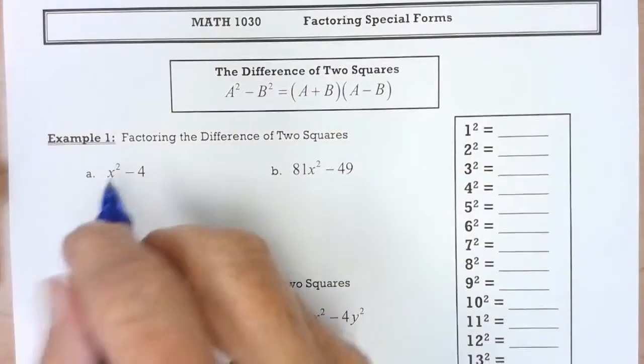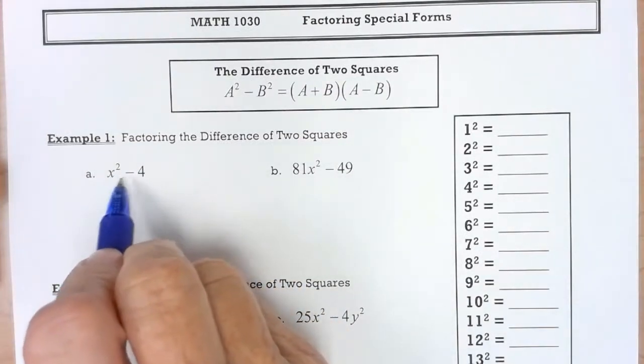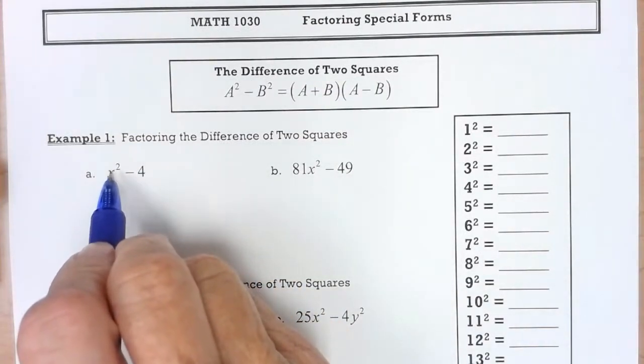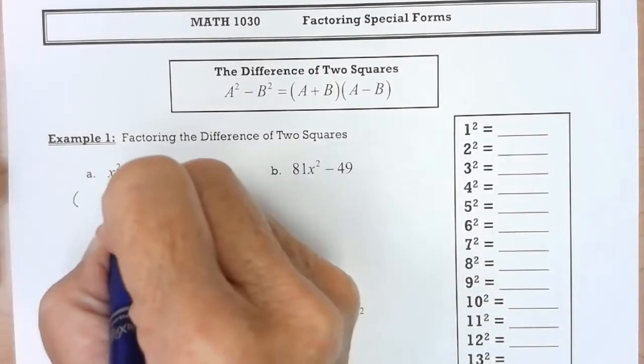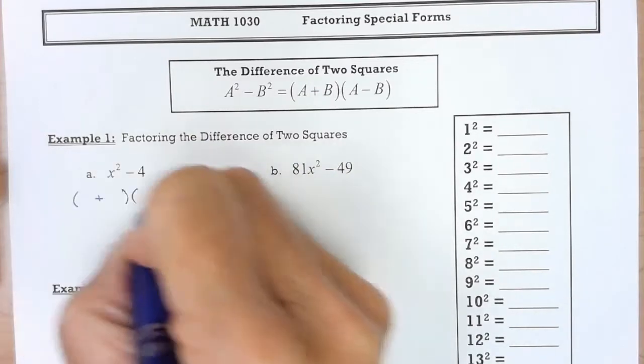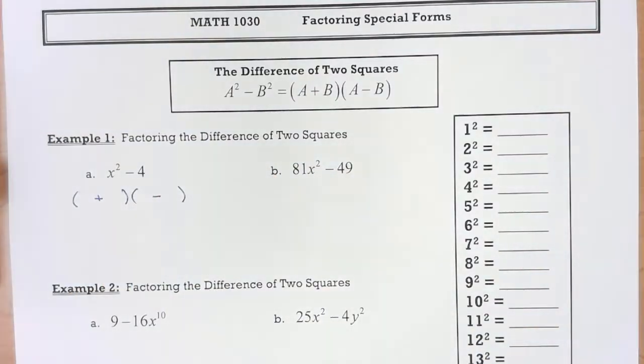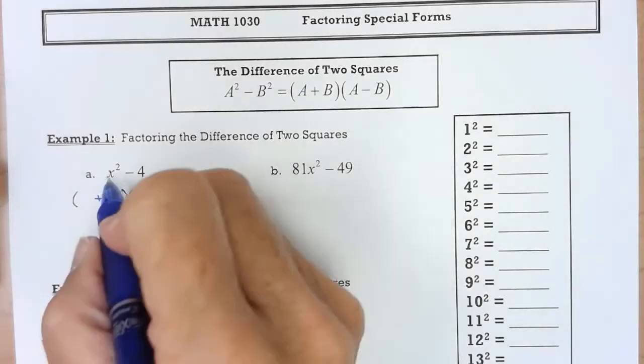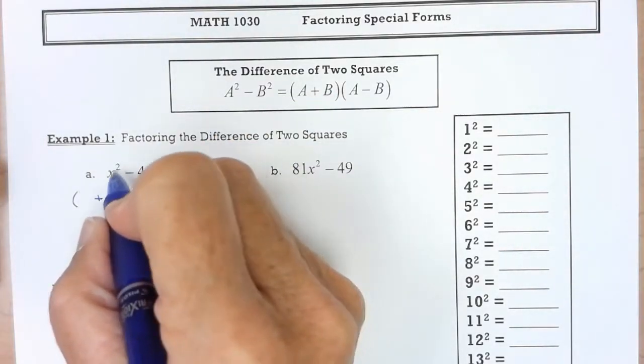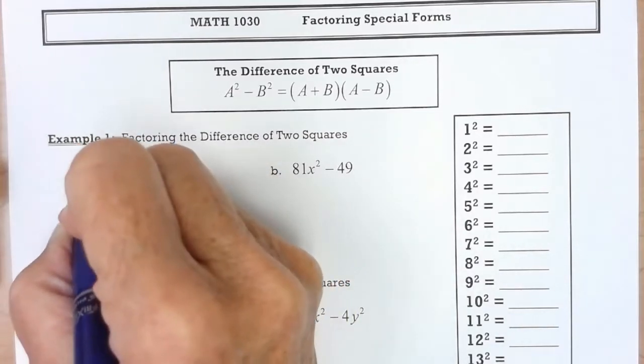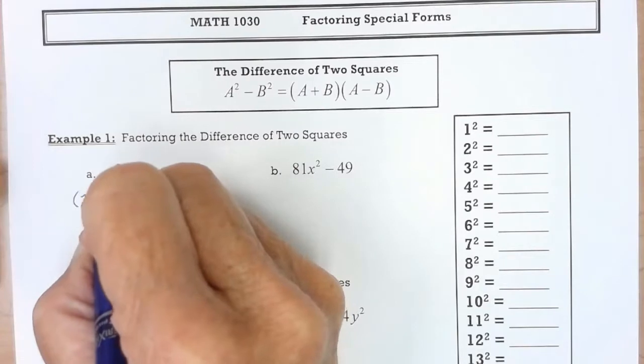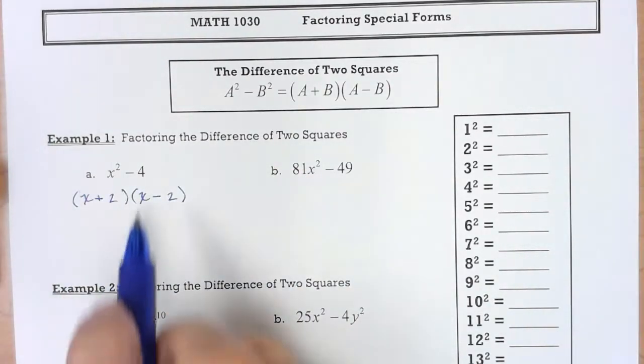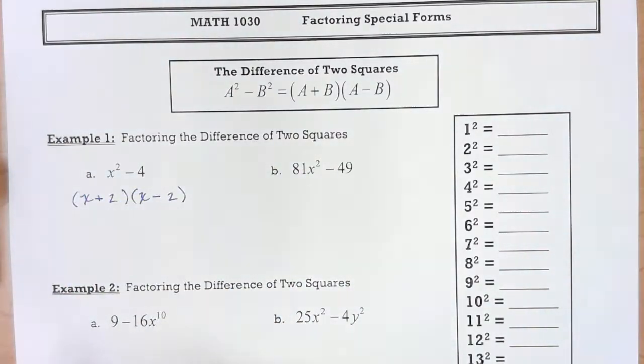So in this first one, I do have a difference. Anytime your variable is raised to an even power, it is a perfect square. So I'm going to factor this. I always put my plus first, then my minus. If you take square root of x squared or divide exponent by 2, you get an x. Square root of 4 is 2. If you FOIL that, you'll come right back up with x squared minus 4.